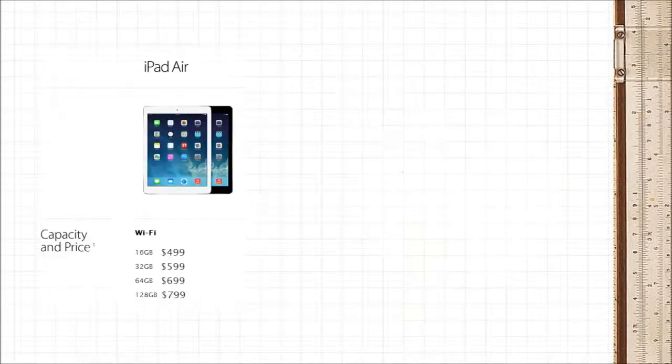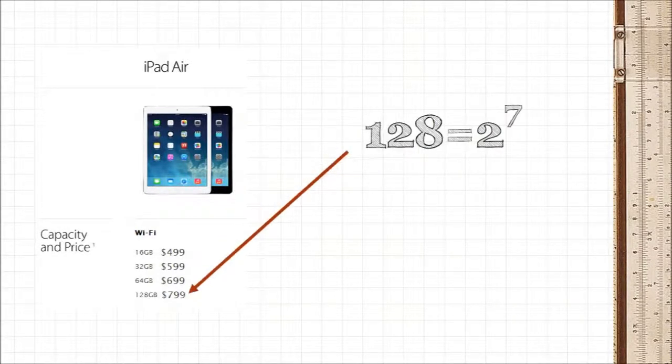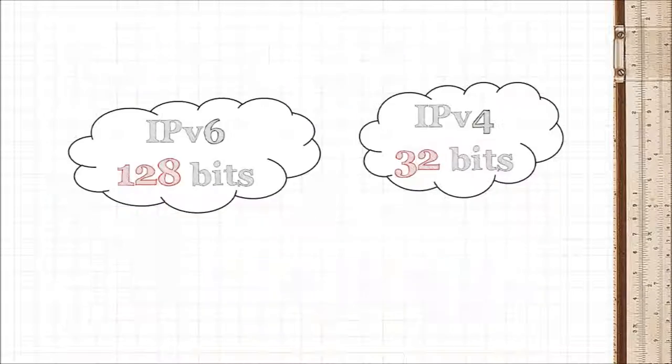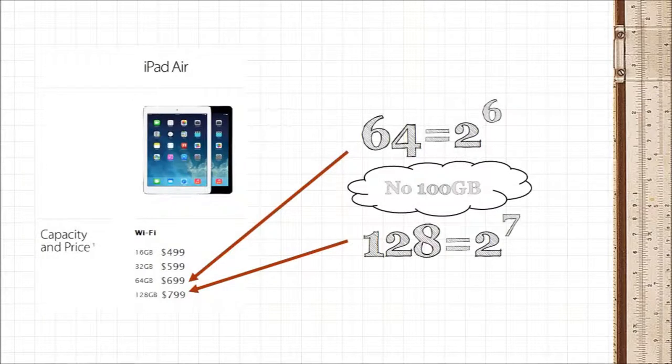And that's why storage space in your iPads are sold in powers of 2, 16 to 32 and so on. These powers of 2 dictate the size of USB sticks, the amount of RAM in your computer, or even IP addresses. And that's why there will never be a 100GB iPad model.